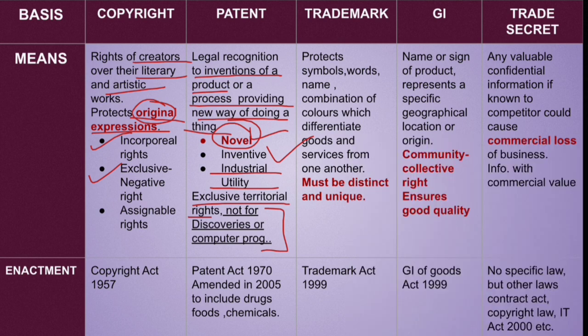Moving to trademark. Trademark protects symbols, words, names, and combinations of colors which differentiate goods and services from one another. We are able to differentiate one producer's goods and services from another producer's due to such trademarks.